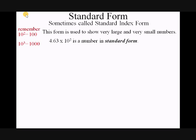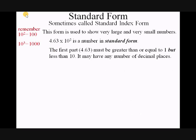Look at this standard form number: 4.63 times 10 squared. We also might say 4.63 times 10 to the power of 2. This is a number in standard form because the first part, 4.63, must be a number that is greater than or equal to 1 but less than 10. The second part is 10 raised to any power.